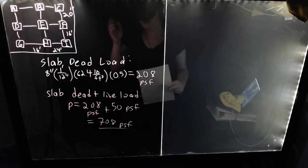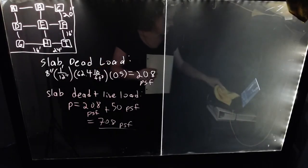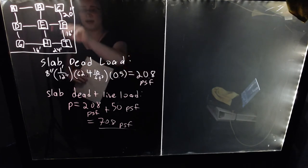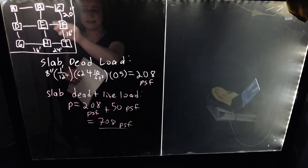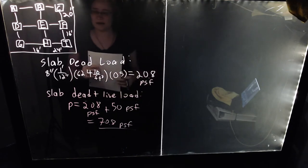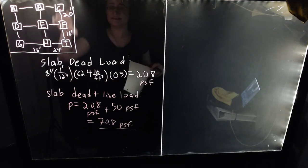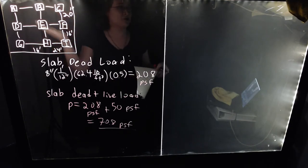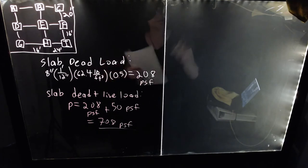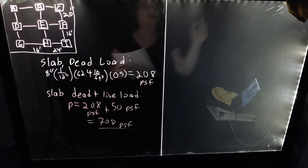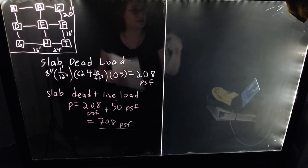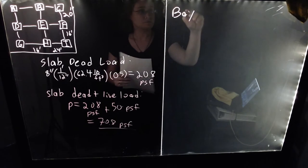Now we need to consider our tributary areas. The tricky thing is that bays EFHI and BCEF are not the same dimension, so we need to consider them separately. If they were exactly the same — say both 24 by 16 — we could just calculate the load on one side and double it. Unfortunately we can't do that. So let us consider bay BCEF and find what portion of that bay is going to be applying load to beam EF.